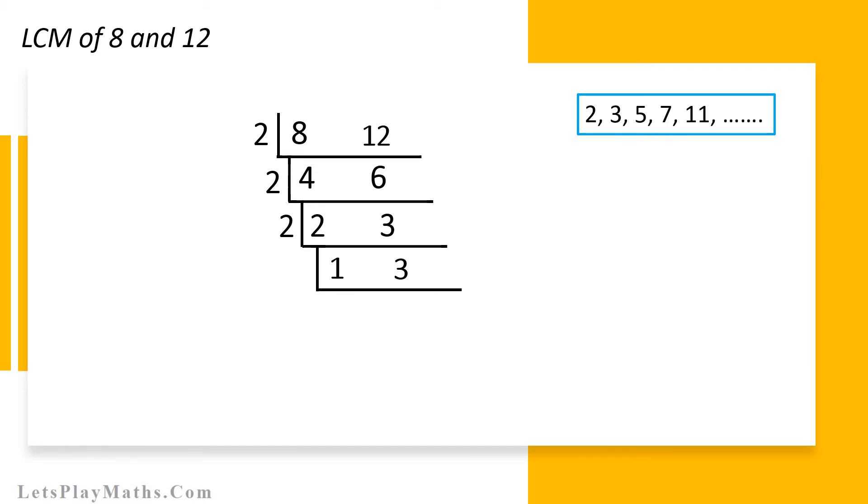Now, we have number 1 and 3 and the lowest prime number that will divide 3 is number 3. So, let's consider number 3 as the lowest prime number.